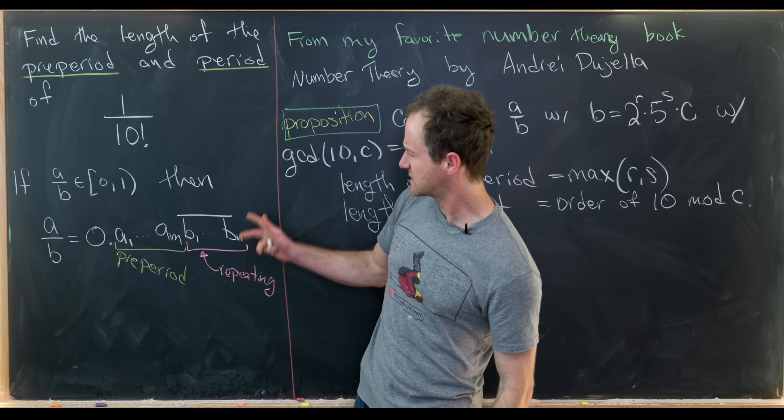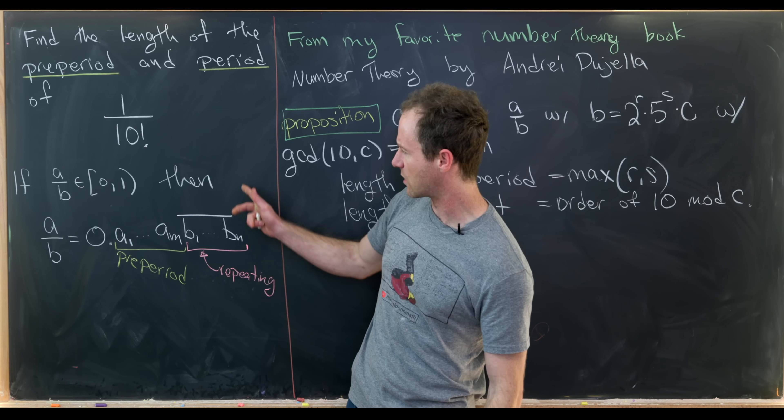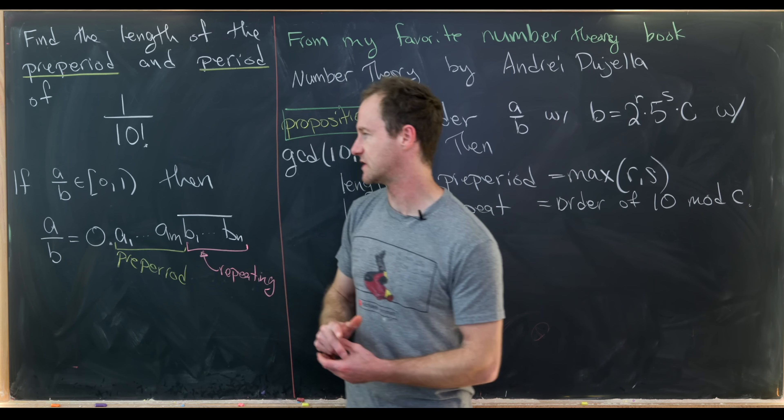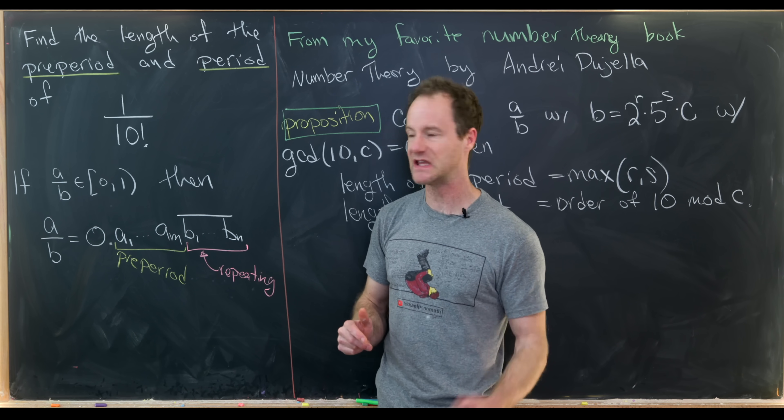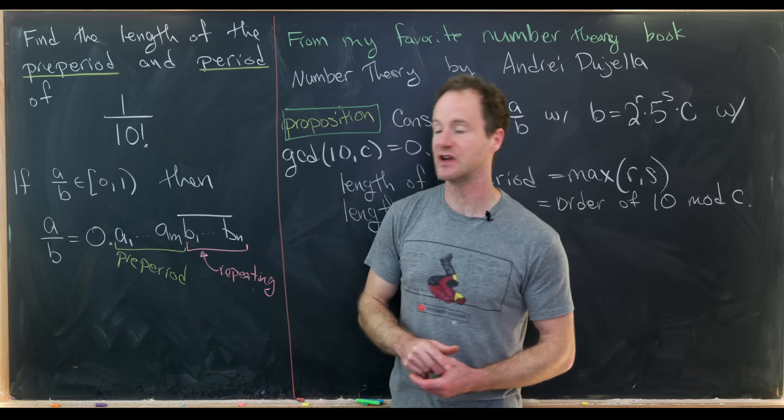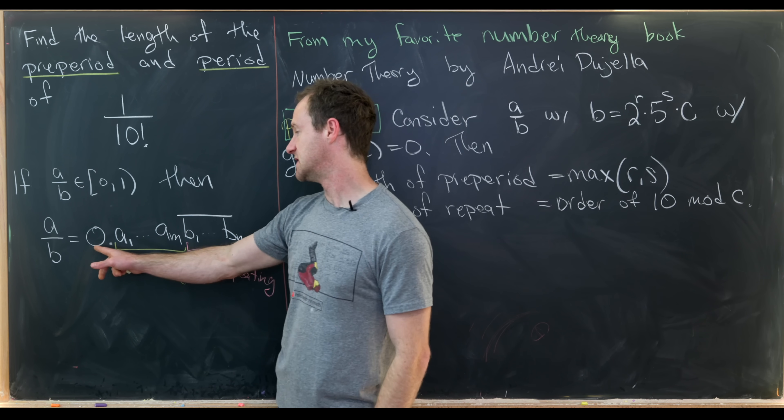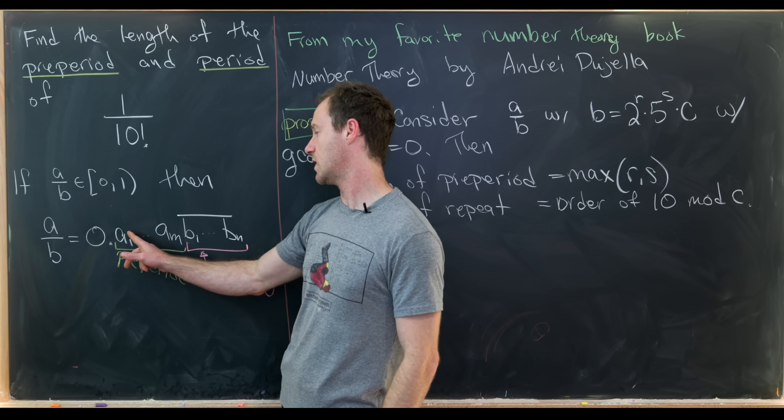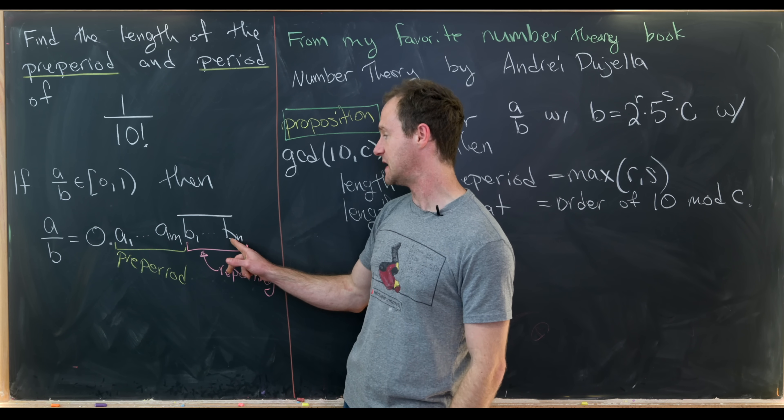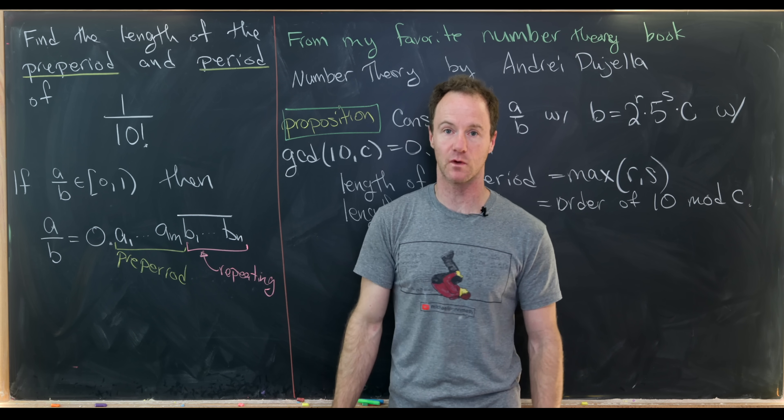Okay, so let's maybe put that into the following notation. So if we have a over b, which is a rational number between 0 and 1, just to keep it easy, then that means we've got a decimal expansion of a over b as 0.a1, a2 up to am, and then b1 up to bn, and this is the repeating portion.